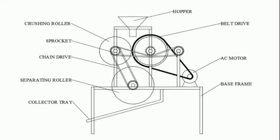Groundnuts are fed into the hopper. The hopper feeds the groundnuts to the crushing roller. The crushing roller crushes the groundnuts and feeds them to the separating roller. The separating roller separates the groundnut shells from the groundnuts.